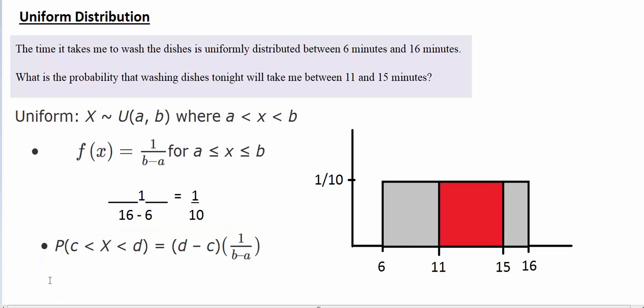we are asking for 11 < x < 15, the interval between 11 and 15 minutes. So we are going to do (15 - 11) × 1/10.